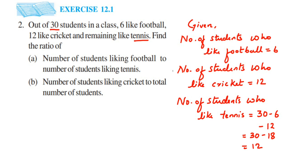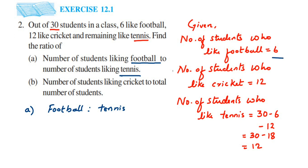Let's find the answer for the first question. It asks for the number of students liking football to the number of students liking tennis. So the ratio is football to tennis — that is, 6 is to 12.